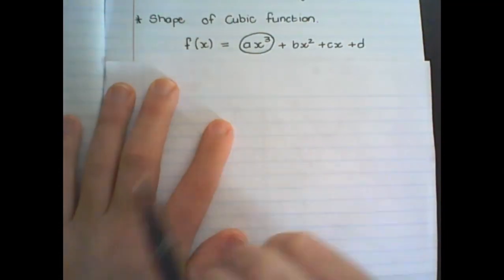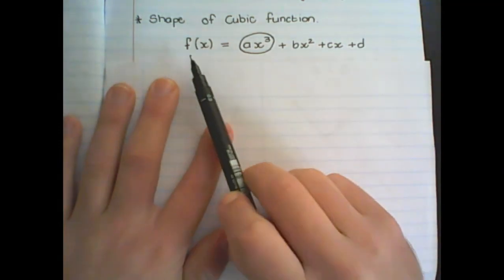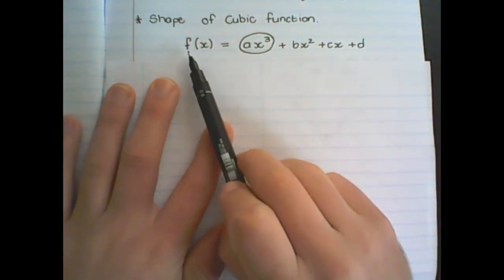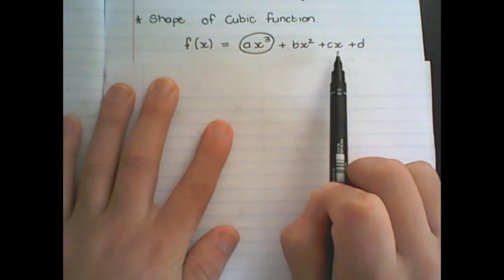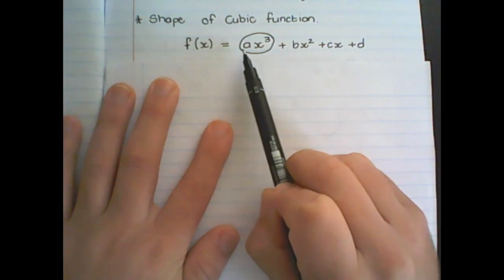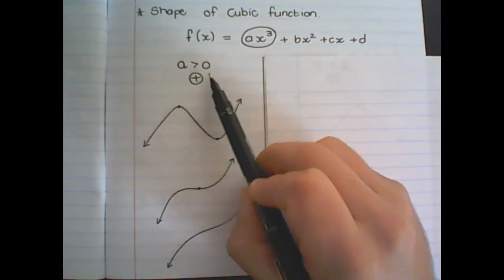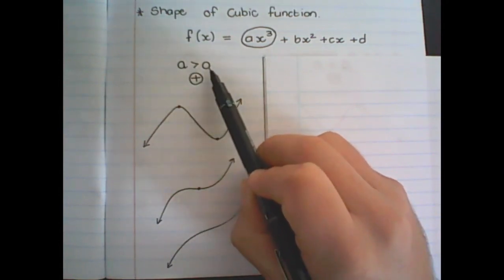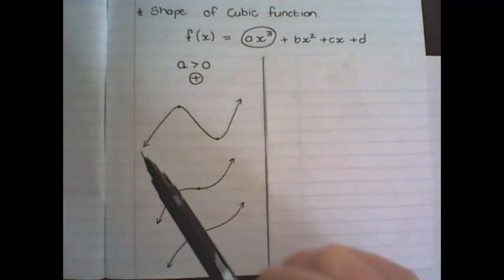For the cubic function we have a similar rule to help us interpret or determine the shape of the graph. Here we have the standard cubic function f(x) equals ax cubed plus bx squared plus cx plus d. Again we are going to look at the value of a in front of the x cubed to determine the shape. When a is positive or bigger than zero, we have three types of cubic functions that can be formed, but in general they have the same shape.